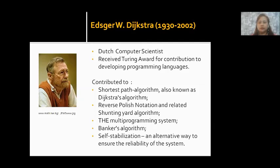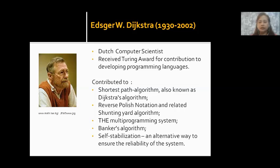Edger W. Dijkstra, 1930 to 2002, was a Dutch computer scientist who received the Turing Award for his contribution to developing programming languages. He also contributed to the Shortest Path Algorithm, also known as Dijkstra's Algorithm, Reverse Polish Notation and the related Shunting Yard Algorithm, the Multiprogramming System, the Banker's Algorithm, and Self-Stabilization — an alternative way to ensure the reliability of a system.